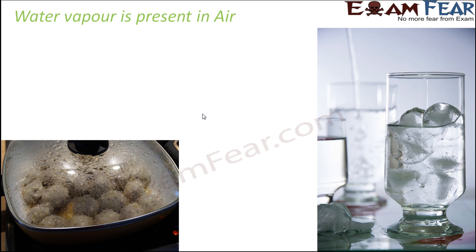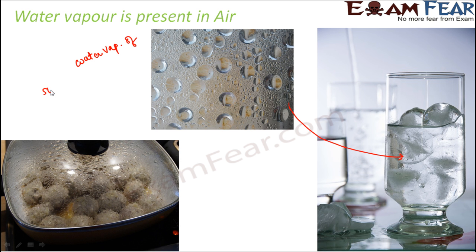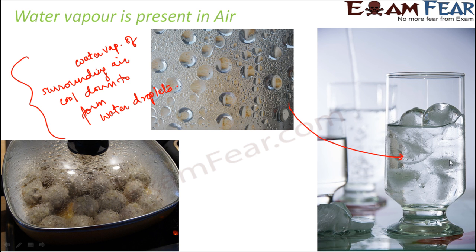Similarly, if you take out a chilled glass of water from the refrigerator and keep it on the table at room temperature, what happens? Again you see tiny droplets of water on the outer surface of the glass. These droplets are also because of the water vapor of surrounding air. The water vapor of surrounding air cools down to form water droplets, and that is why we see these droplets of water on the outer surface of the glass.